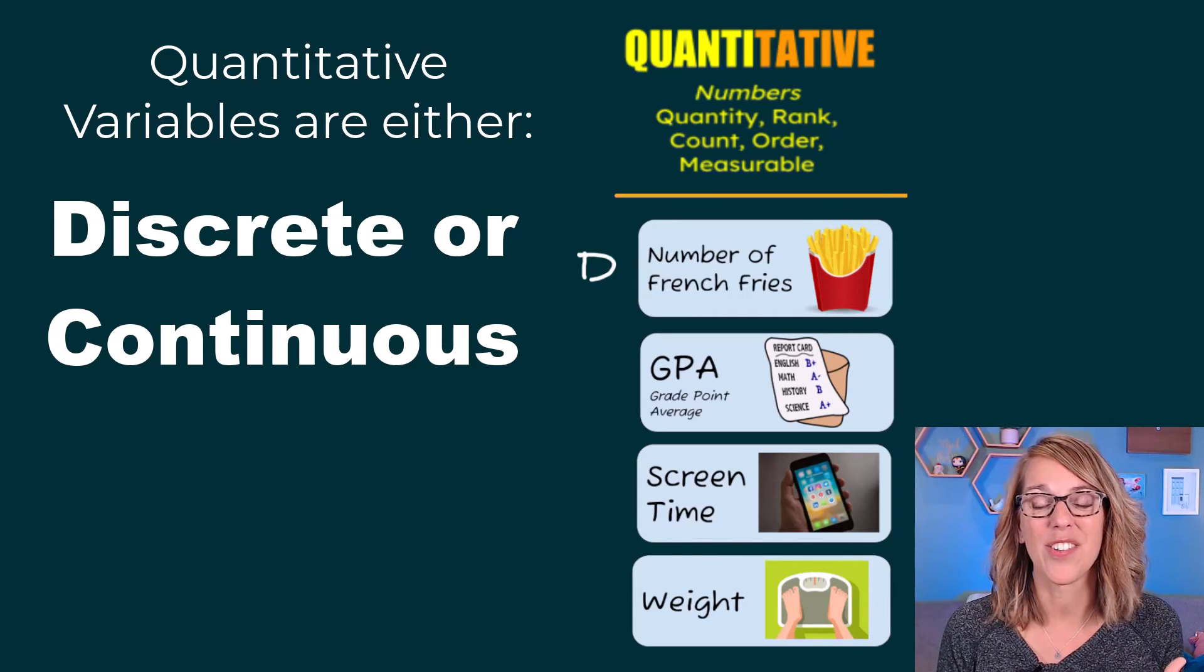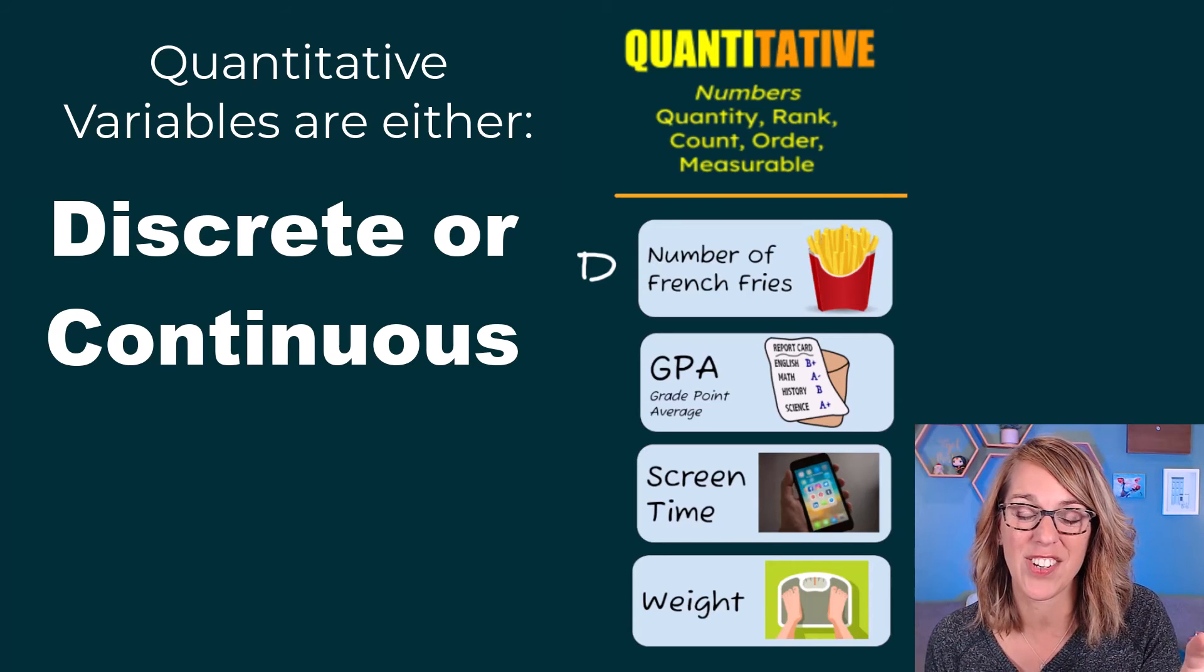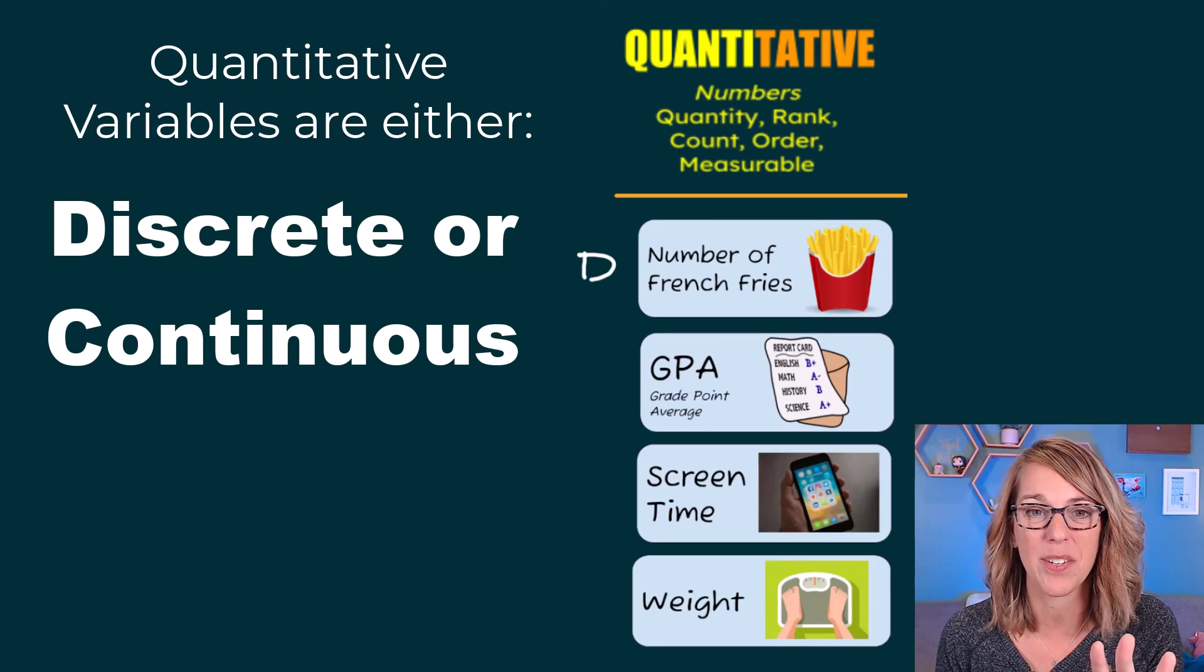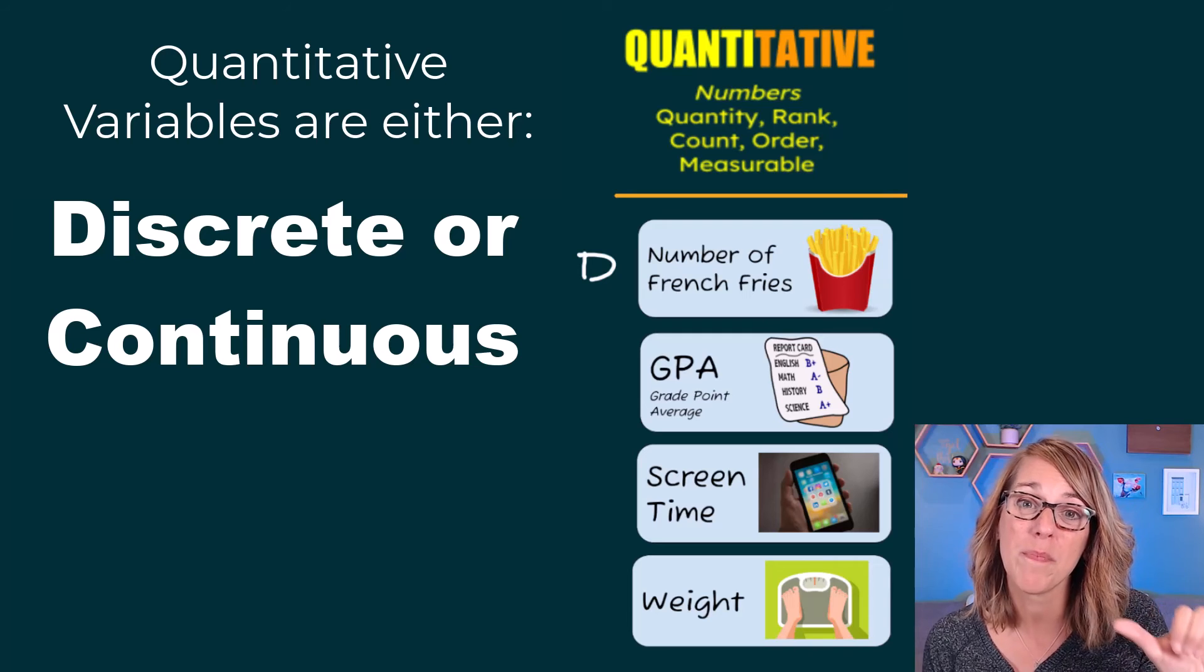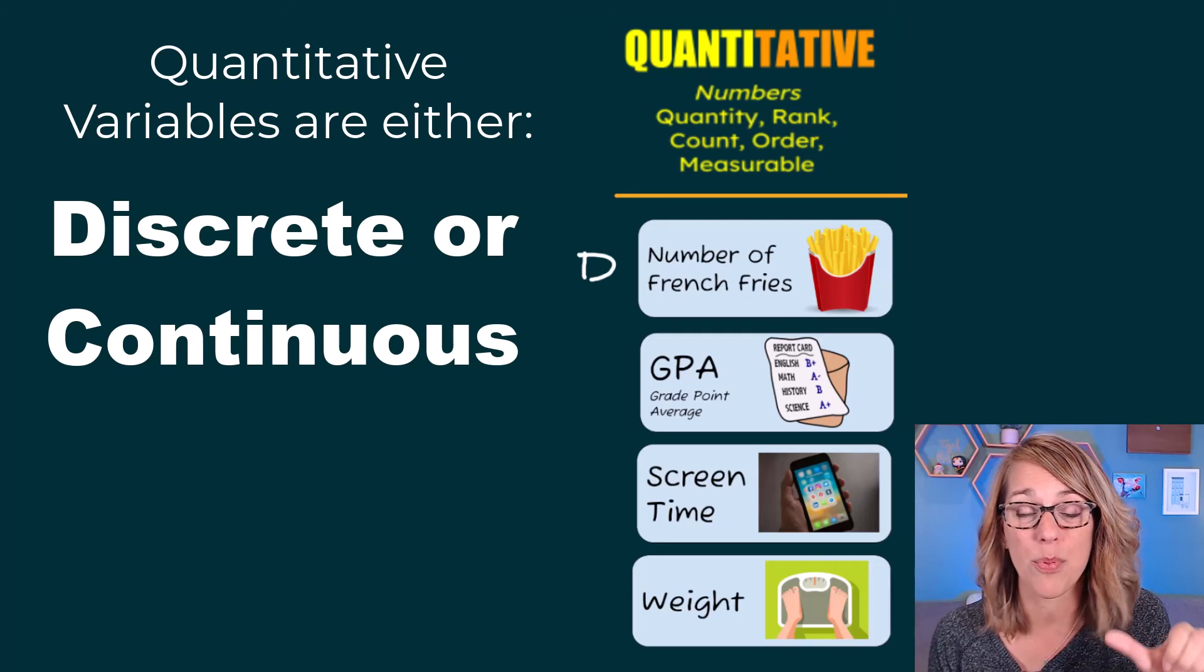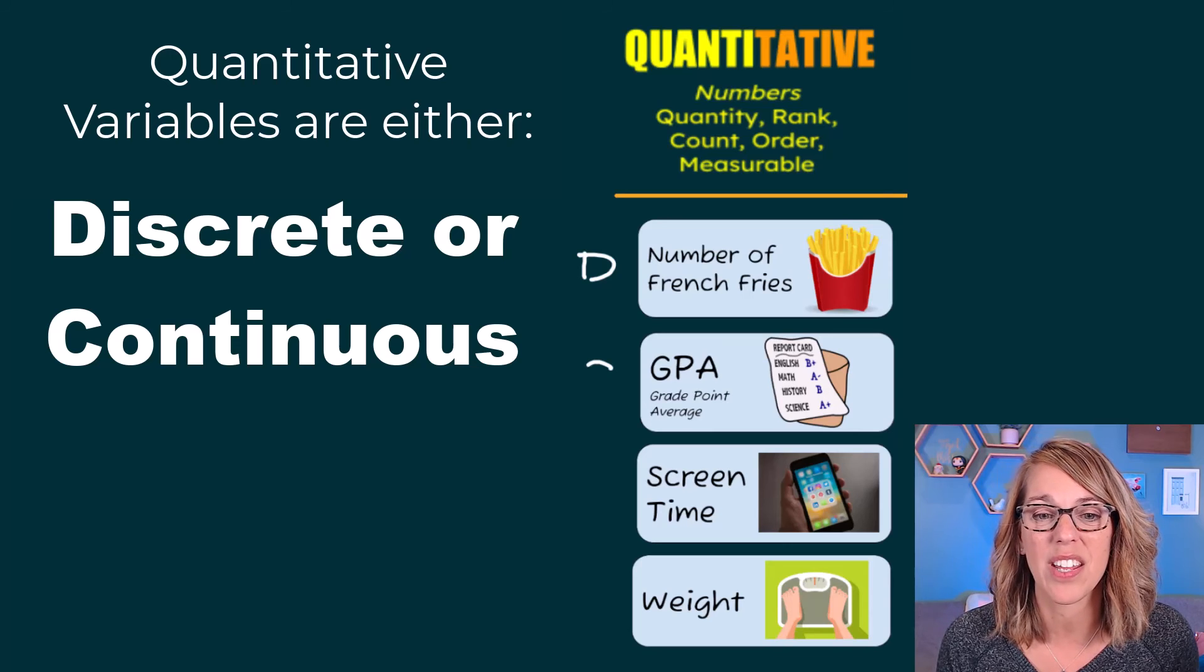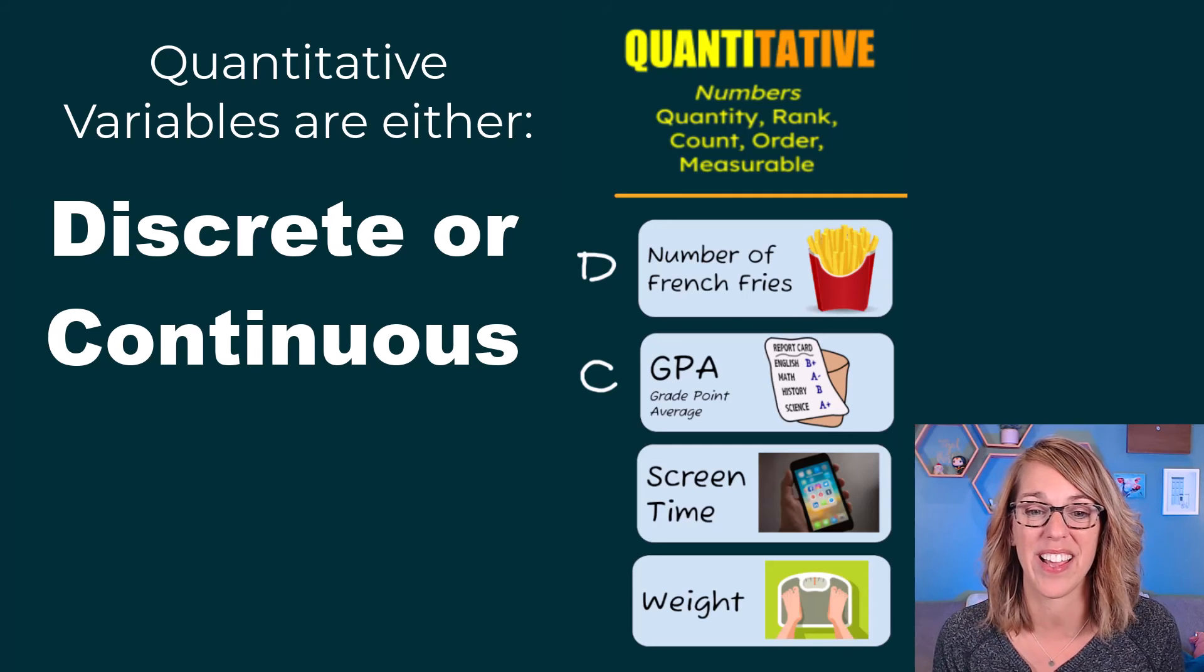Next is GPA. So GPA is a calculation, which means as we do the calculation, take grade times credit divided by the number of credits, whatever it happens to be. I'm calculating it. So I could end up with a whole bunch of decimal places that have probably been rounded. Because it's a calculation, this one's going to be a continuous variable. It can take on any number on the number line.